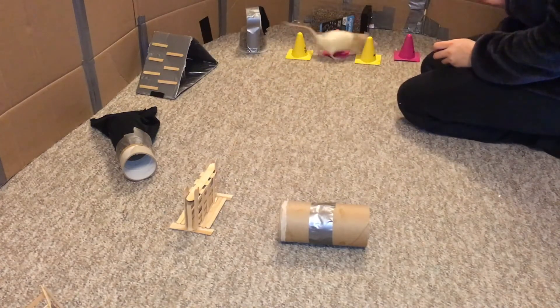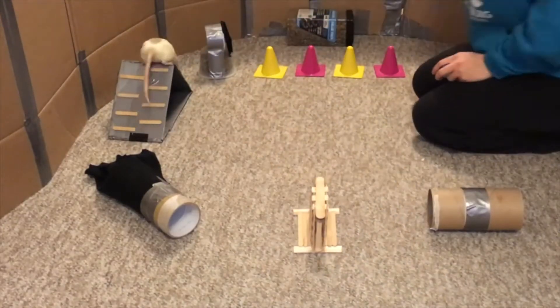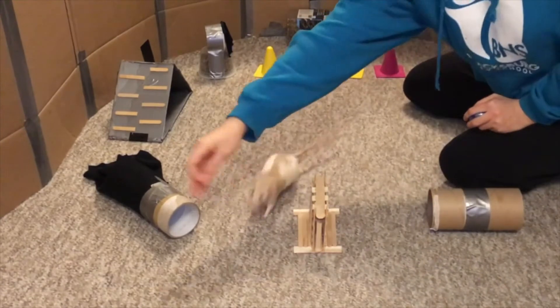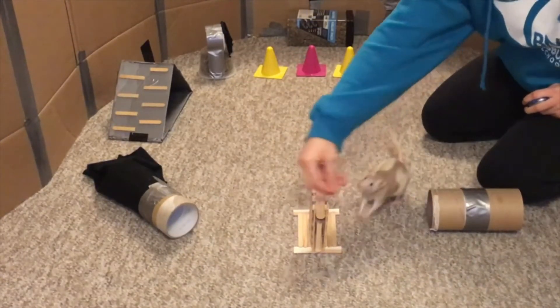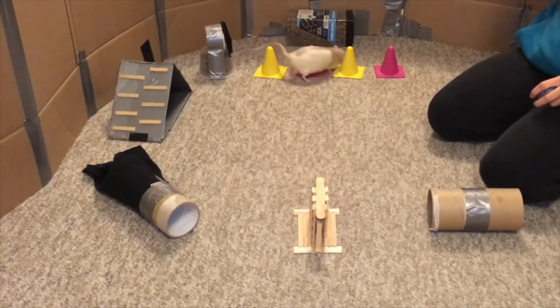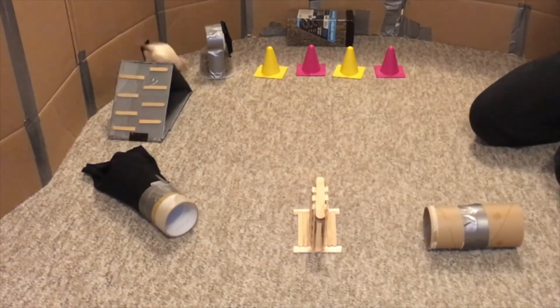Now we're going to continue to add each of our obstacles in a similar manner. Next I'm going to add the A-frame, then the chute, then the bar jump, and finally the tube. Once Latte can do all of these obstacles in a row for one click, she has successfully learned this course.